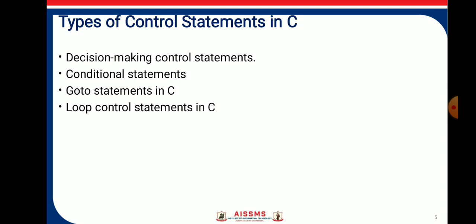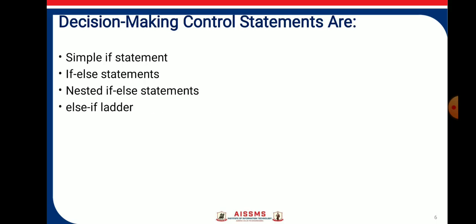There are four types of control statements in C: the decision making control statement, the conditional control statement, the goto statement, and the loop control statement. Under decision making control statements, there are four subtypes: the simple if statement, the if-else statement, the nested if-else statement, and the if-else ladder statement.